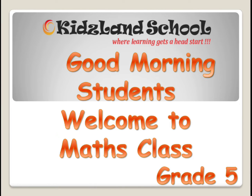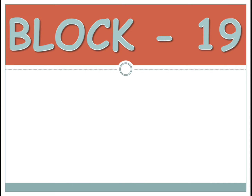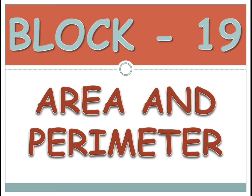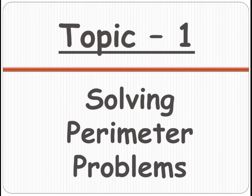Good morning children, welcome to maths class. In maths we are solving the problems of the 19th block which is area and perimeter. Yesterday we started with our first topic which is solving perimeter problems, where we found the perimeter of a rectangle and a square. There are a few more sums which we have to do, so today we will complete that.